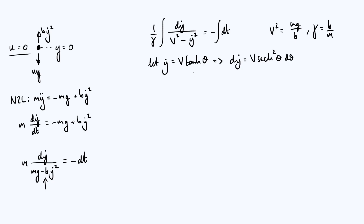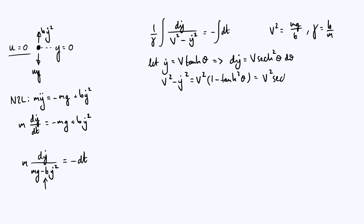For the denominator of the integrand, V² − ẏ² becomes V²(1 − tanh²(θ)). Using the hyperbolic trig identity cosh²− sinh² = 1, dividing by cosh² gives 1 − tanh² = sech². So the denominator is V²·sech²(θ), which equals V·sech²(θ) after factoring. Substituting back into the integral, the sech² terms cancel, leaving just dθ/V, so the integral simplifies to ∫dθ/V, and integrating the right-hand side gives minus t plus a constant T.